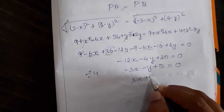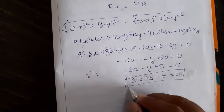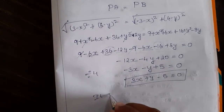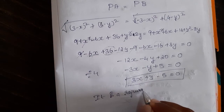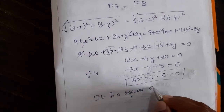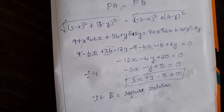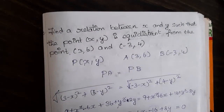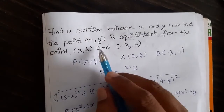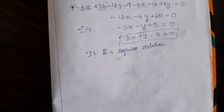Or changing signs: 3x + y - 5 = 0. This is the required relationship between x and y. We stop here since they didn't ask to find x or y individually — there isn't enough data for that. They only asked for the relationship, which is a linear equation. Thank you.